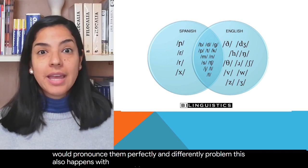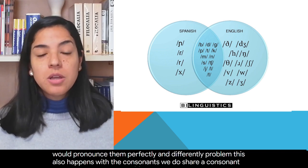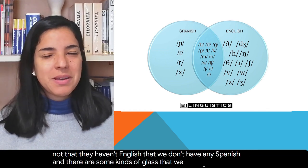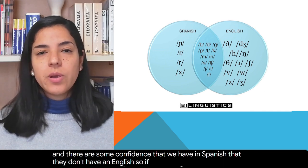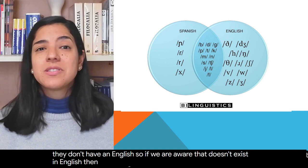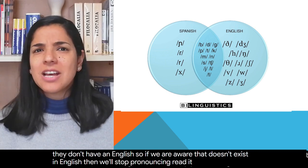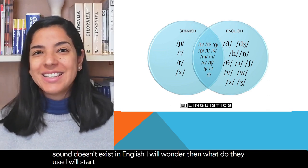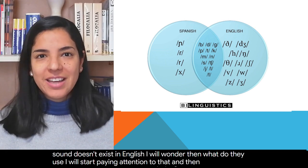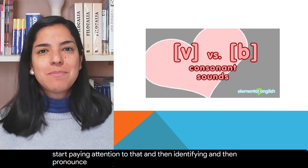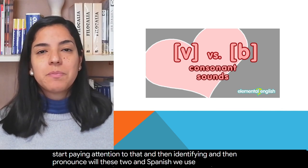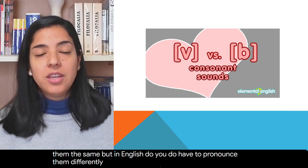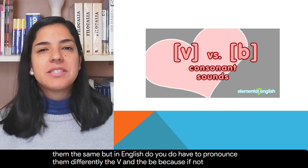This also happens with the consonants. We do share consonants too, but there are some consonants that they have in English that we don't have in Spanish, and some that we have in Spanish that they don't have in English. So if we are aware that the rolled R doesn't exist in English, then we'll stop pronouncing it, and we'll wonder what they use instead, and start paying attention, identifying, and then pronouncing. For example, in Spanish we usually pronounce the V and the B the same, but in English you do have to pronounce them differently — because if not, you can be saying the wrong word.